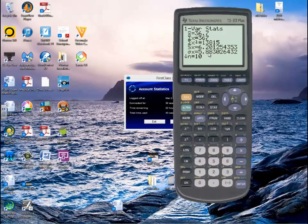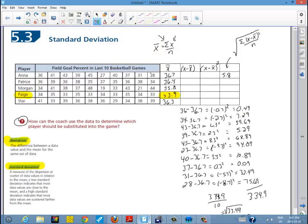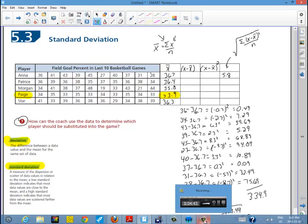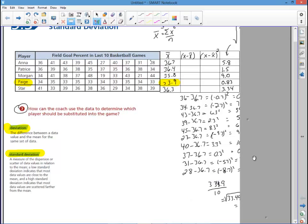I'll calculate it at 5.8 and the difference will be due to rounding or dropping decimal points as you're going through calculations. That can be done very quickly and I'll enter each of those values now for the rest of the players. We're looking to see who's the most consistent player. Now that I've completed the standard deviations for the rest of scores, we see that Patrice has a deviation 1.5, Morgan 9.0, Paige 0.83, and Star 3.34.